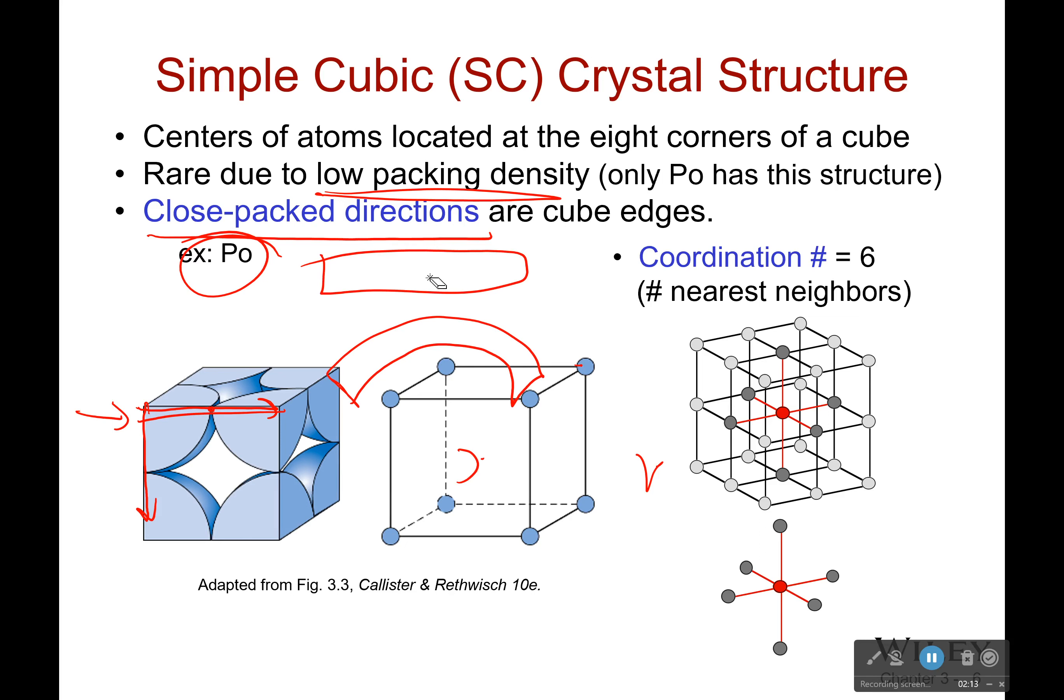Okay, so here are some definitions here. Coordination number is the number of nearest neighbor or touching atoms. So if I pick a particular atom, how many atoms is it touching?